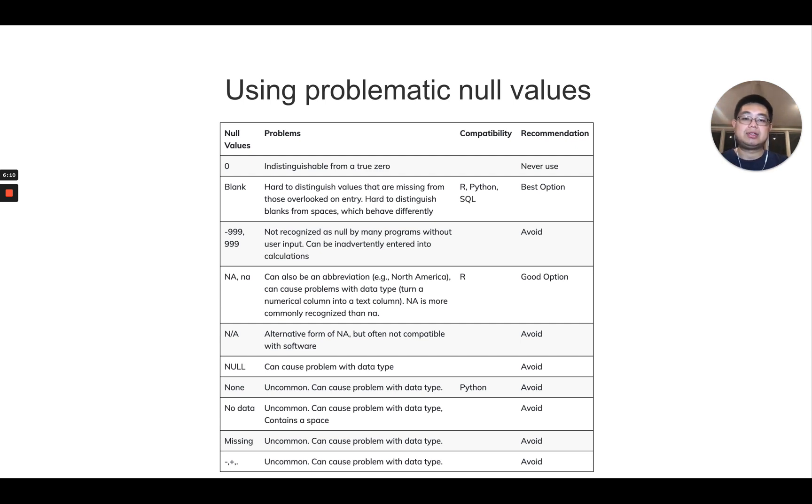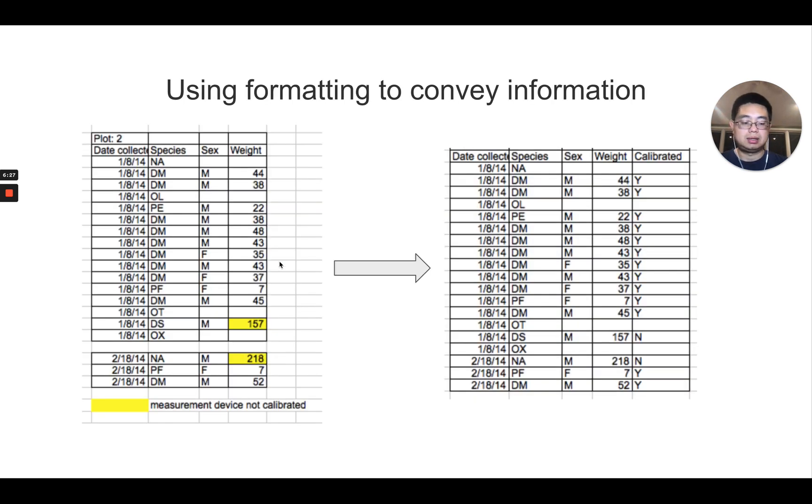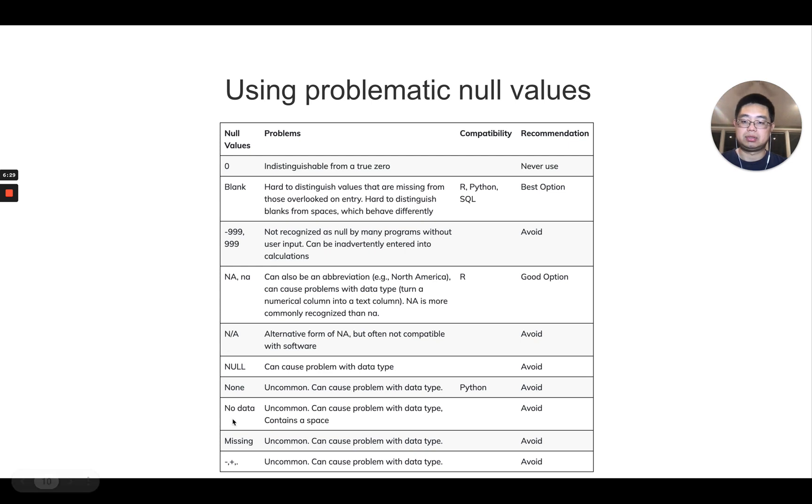Let's talk about null values. So if that value is not available, you should leave it as a blank as the best option. So the other good option is to use NA here. You should never use zero because it's indistinguishable from a true zero. And the rest of them, you should really avoid to use them.